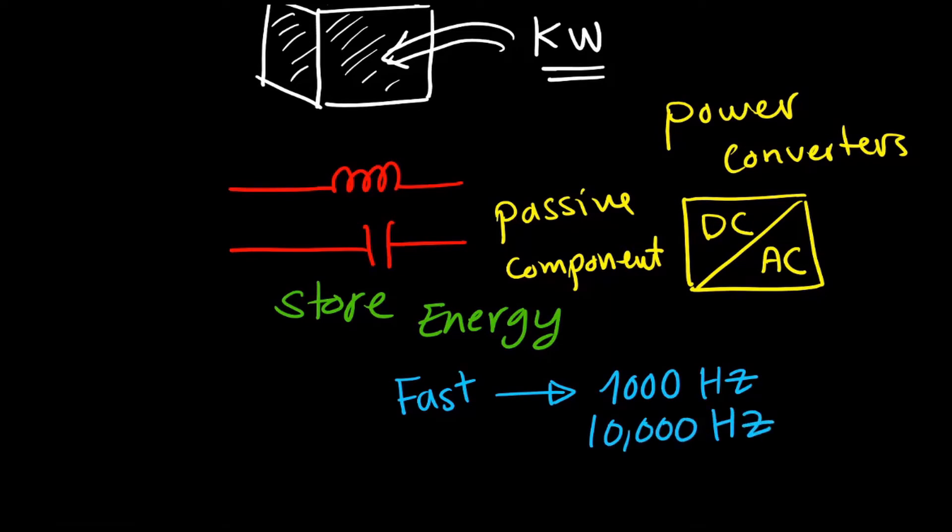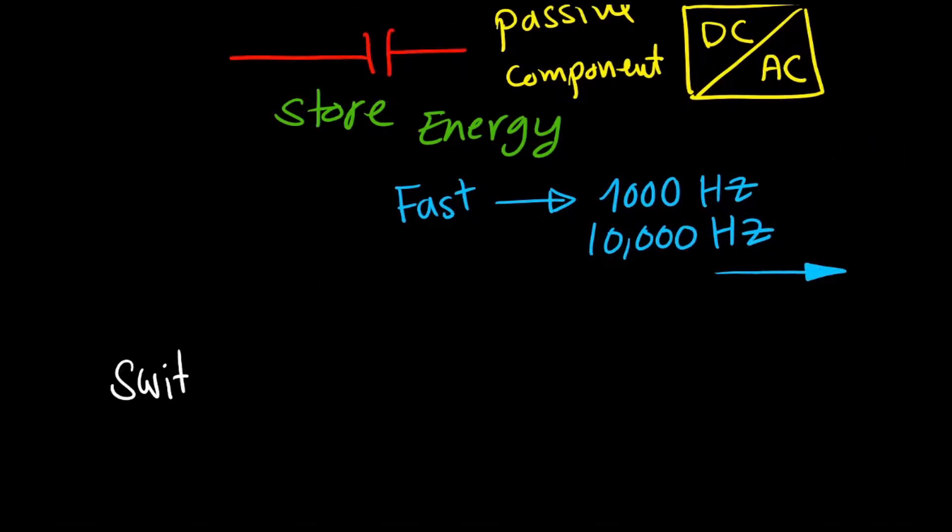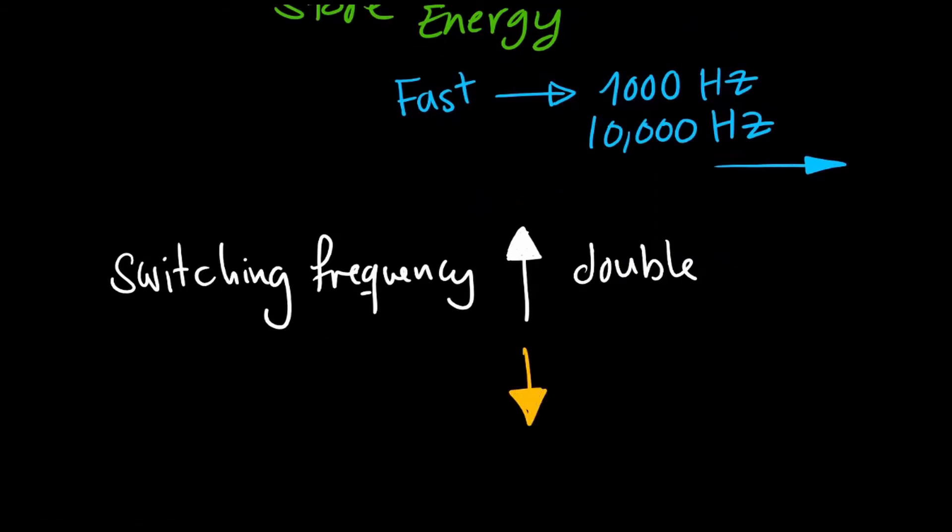Generally, if we manage to increase the switching frequency of the switching devices to the double, we should be able to reduce the size of passive elements in the power converter to the half.